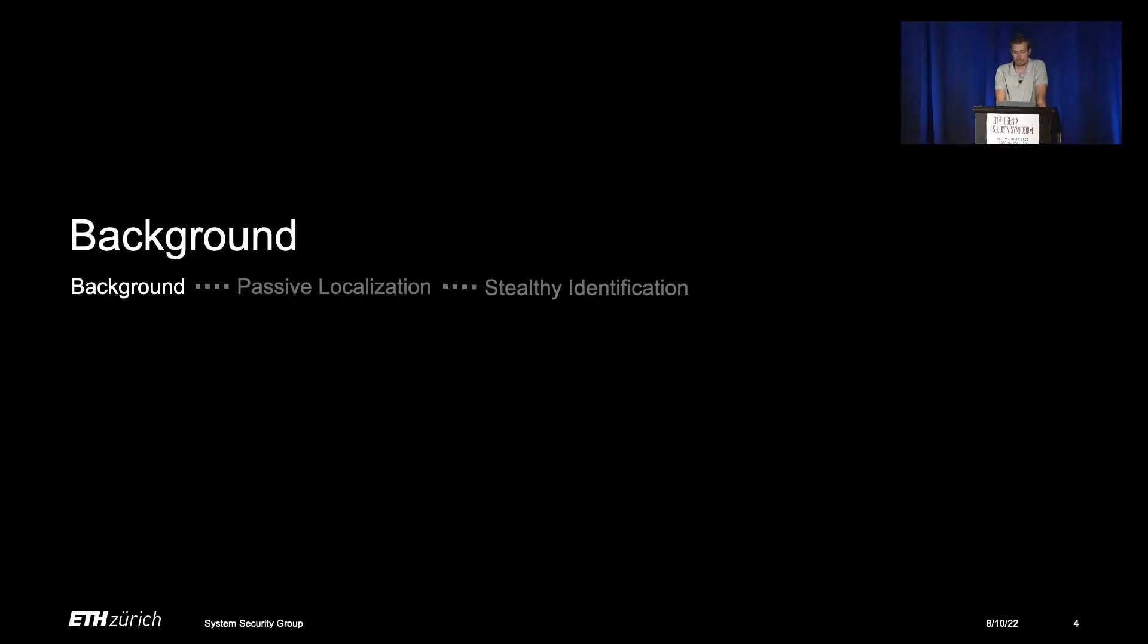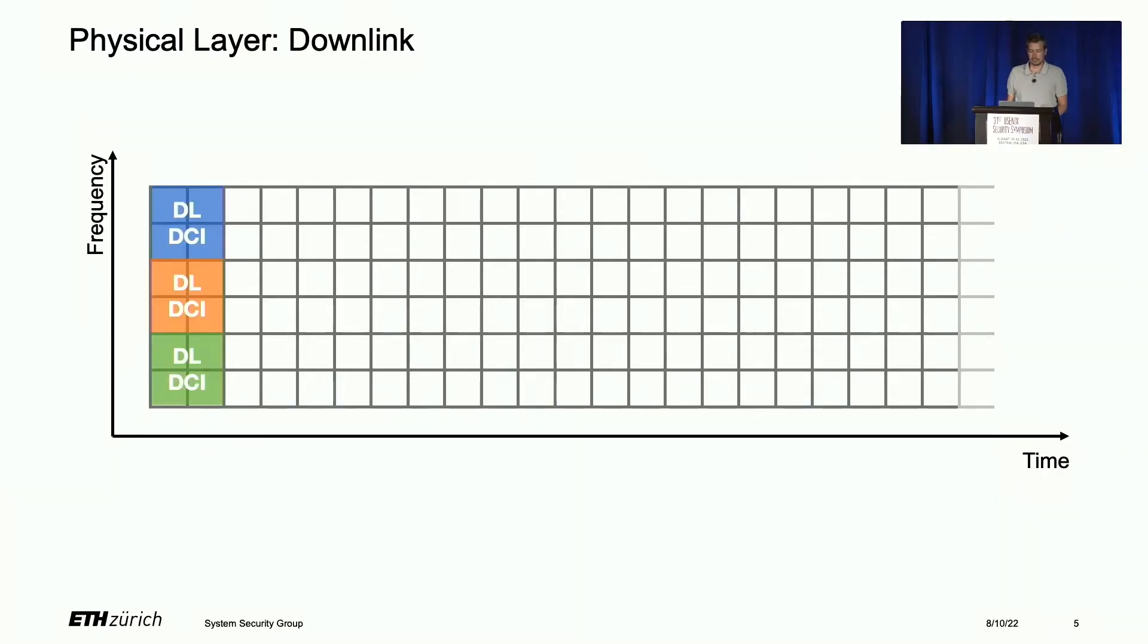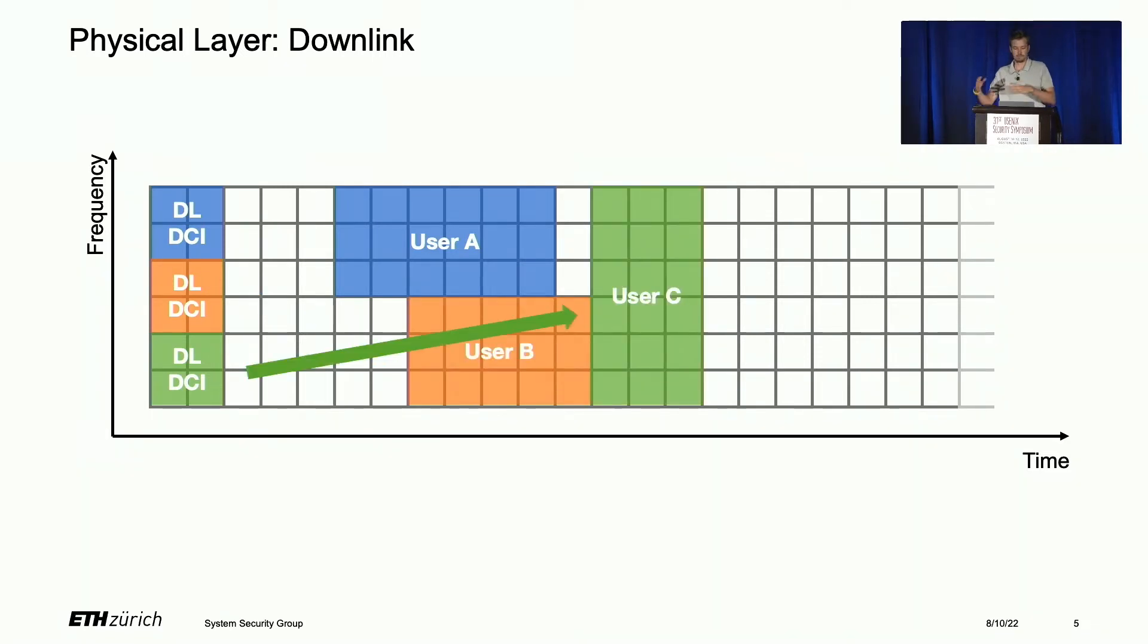First, a bit of background about the physical layer of LTE networks. In LTE, all information is sent through the radio interface inside a resource grid. This resource grid is 2D in frequency and time. Every single resource element, these individual squares, contains some data. If a user wants to decode data addressed to them, they first need to look for downlink DCIs. These DCI blocks contain the location of the user data and how a user can decode those locations. Essentially, user A, user B, and user C have multiple different DCIs.